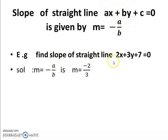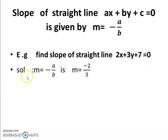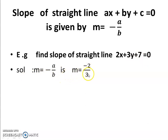Example: find the slope of straight line 2x plus 3y plus 7 equal to 0, where a is 2, b is 3, and c is 7. Our formula is m equal to minus a upon b. Therefore, m is equal to minus 2 upon 3.